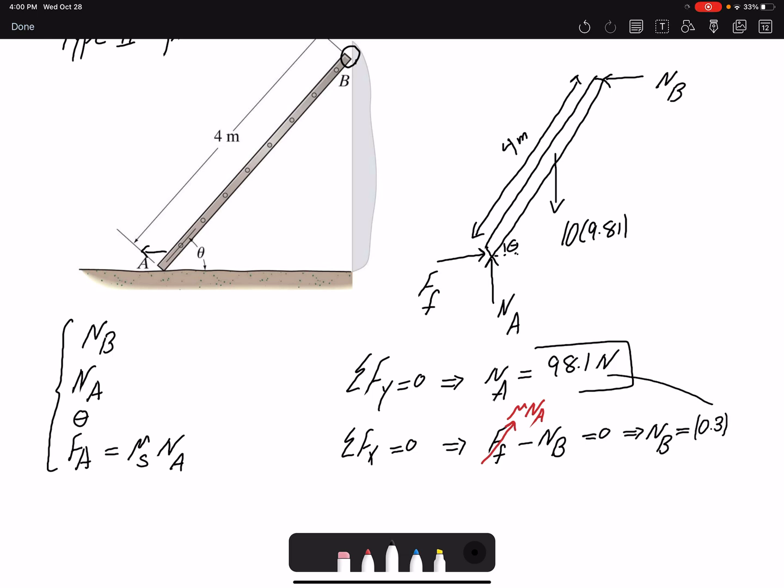Na here is 98.1. Therefore, Nb would be 29.43 Newtons.